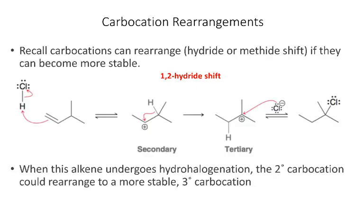In this video we're going to talk about carbocation rearrangements and oxy-mercuration. If we remember from chapter 6, carbocations can rearrange. This will typically occur if we can switch from a less stable primary or secondary carbocation to a more stable tertiary carbocation.